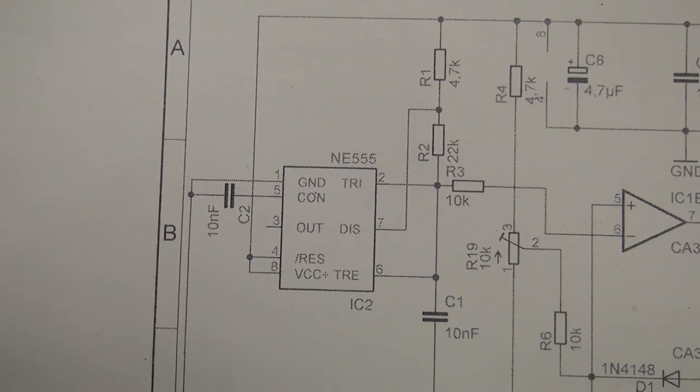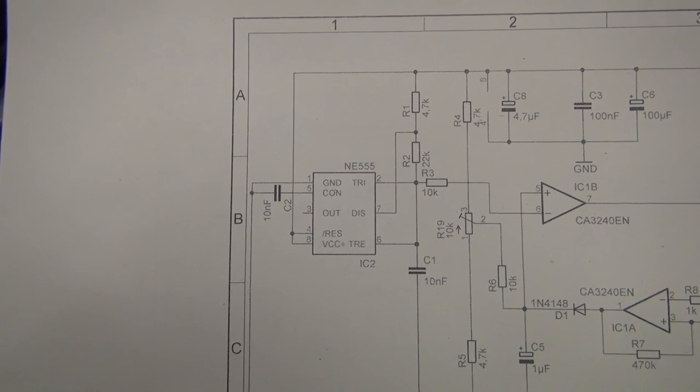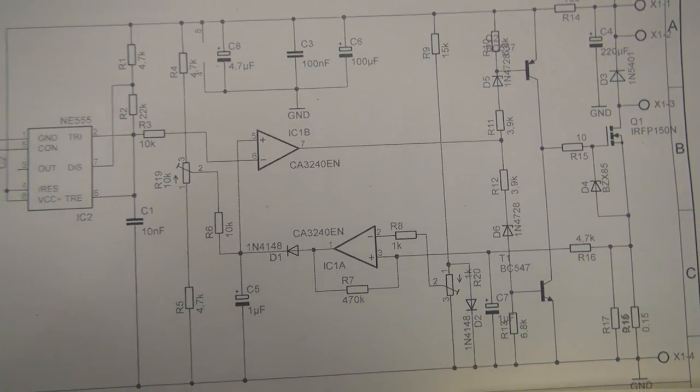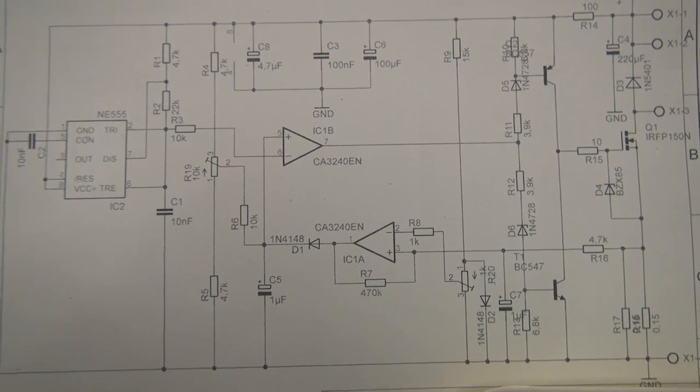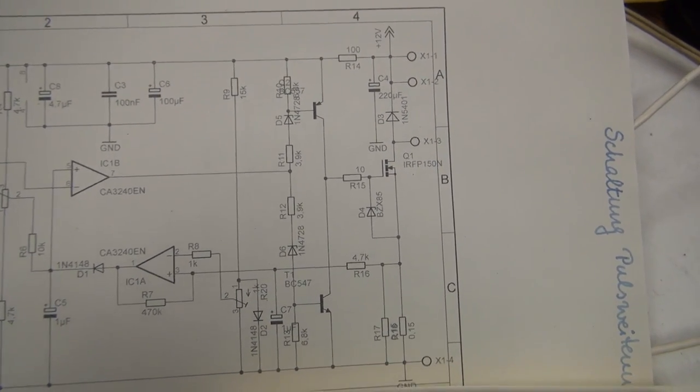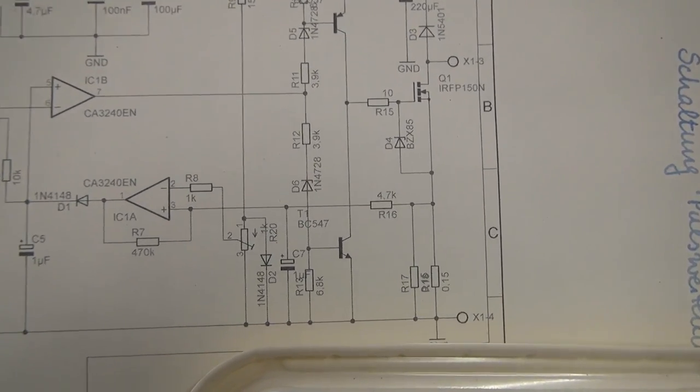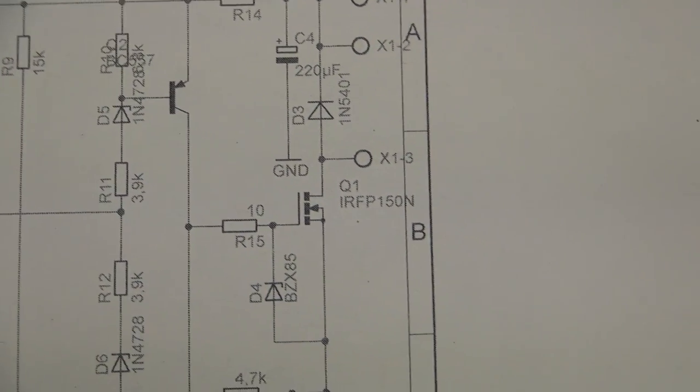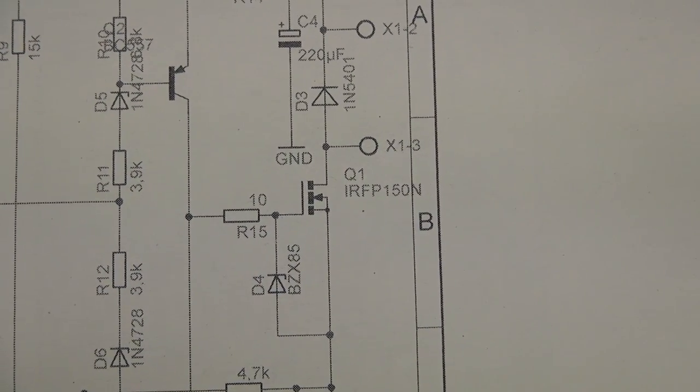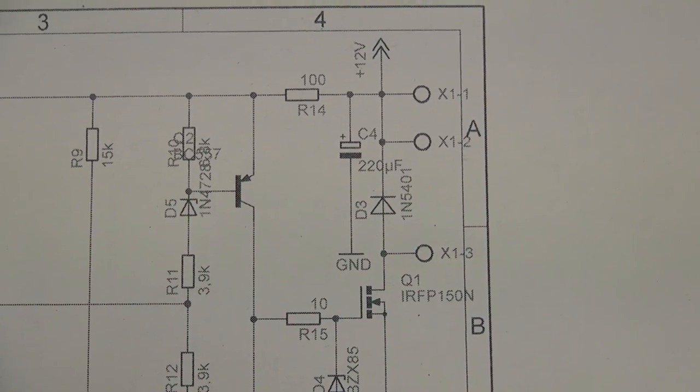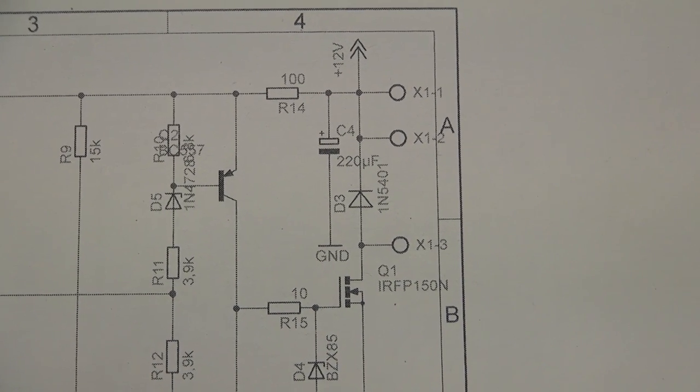At the heart of the circuit is an NE555 chip, as you can see, that generates the clock frequency. We then have some op-amps for something. We do have what looks to be a push-pull output stage right there, and that drives the main switching transistor. It's a MOSFET right there, IRFP150N. And I've got a little protection diode protecting the outputs.